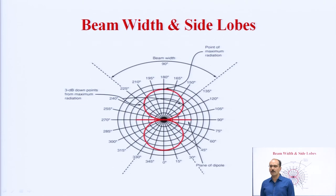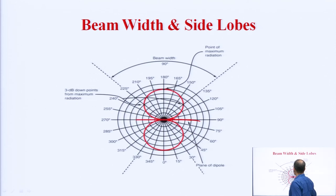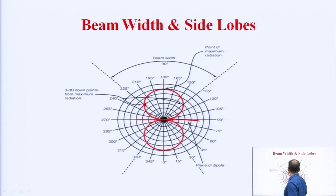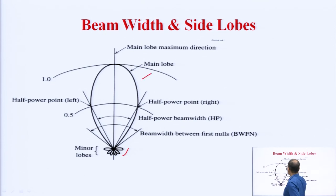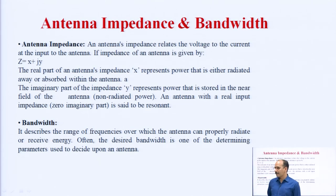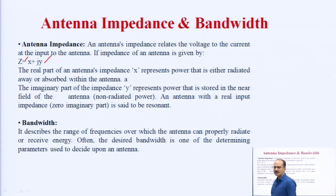Then we talk about beam width and side lobe, jo ki main aapko pehle hi bata chuka hoon. This is the radiation pattern in red color — inke beech mein yeh jo position hai jahan par power 0 pad rahi hai, that is the half power beam width. This is another example of the same pattern of beam width and side lobes. Here you can easily see minor lobes, major lobe, half power beam width, beam width between first nulls, and the half power point where the power is cut down — so the major lobe maximum direction is here. Then antenna impedance and bandwidth — impedance is basically a complex quantity where Z = X + jY. Bandwidth is the frequency range defined earlier.